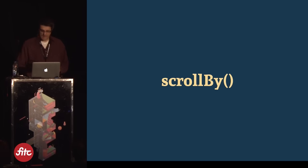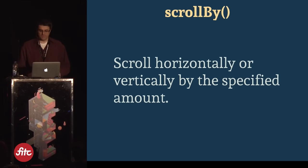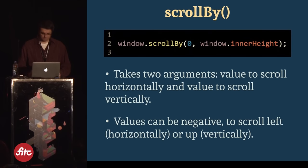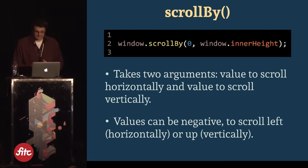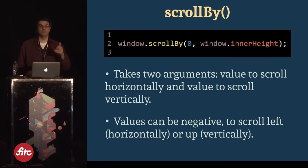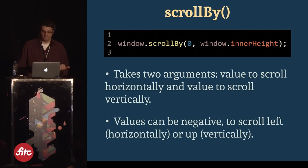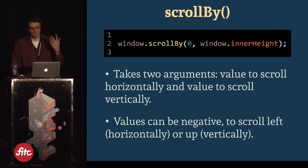Here's a method called scrollBy, which simply lets you scroll horizontally or vertically by a specified amount. It takes two arguments: the value to scroll horizontally and the value to scroll vertically. Passing in zero for horizontal and window.innerHeight for vertical allows you to scroll down by a full page at a time. You can also use negative values to scroll left or up.